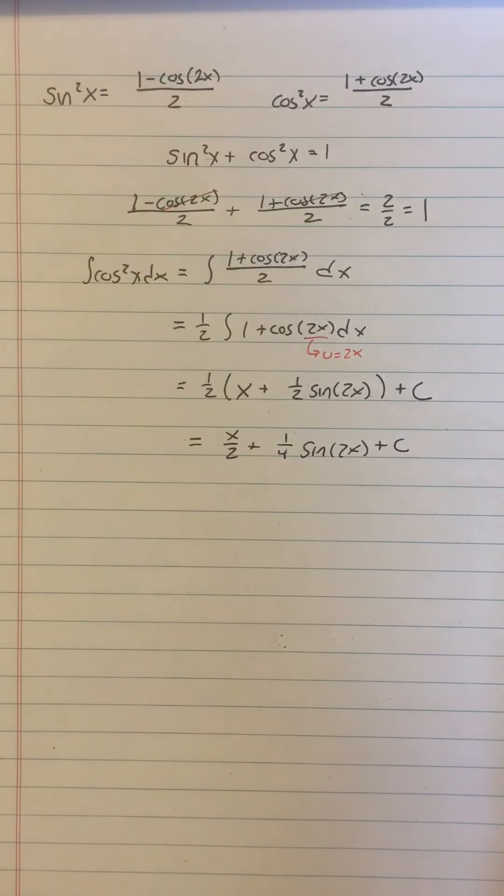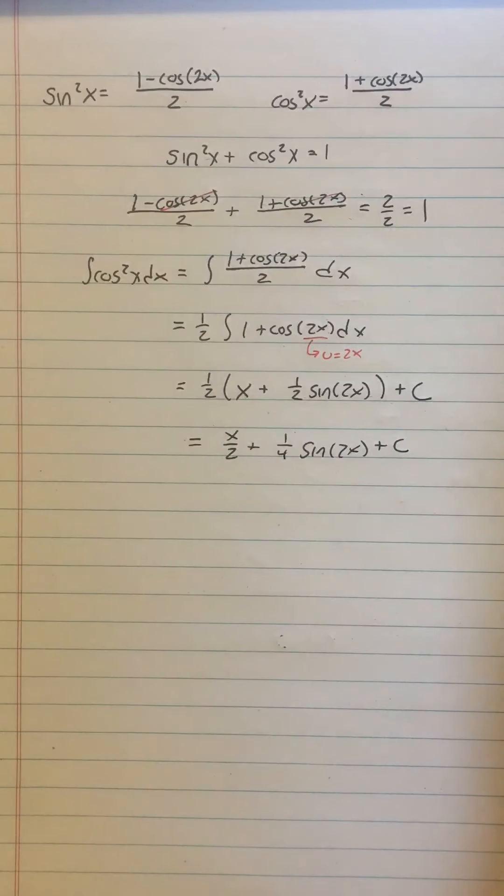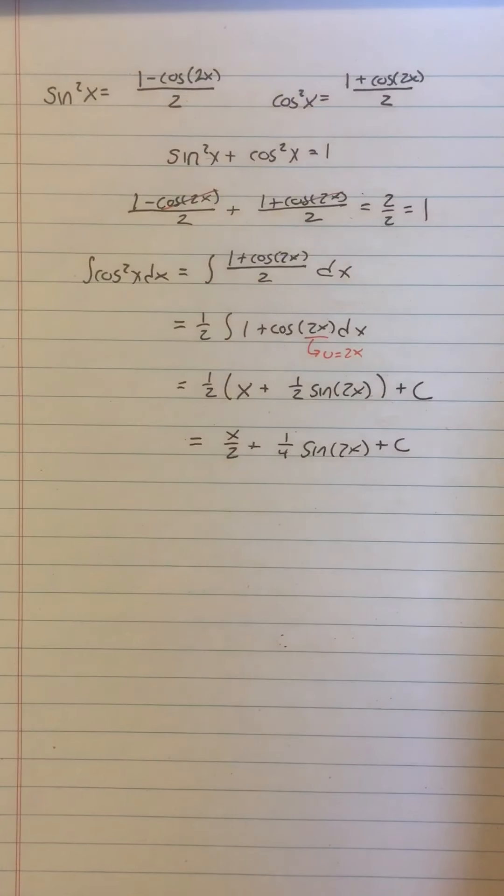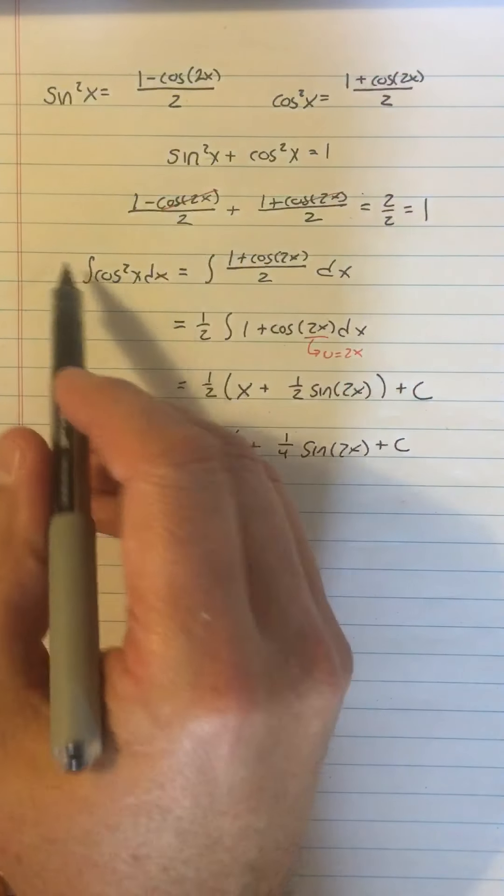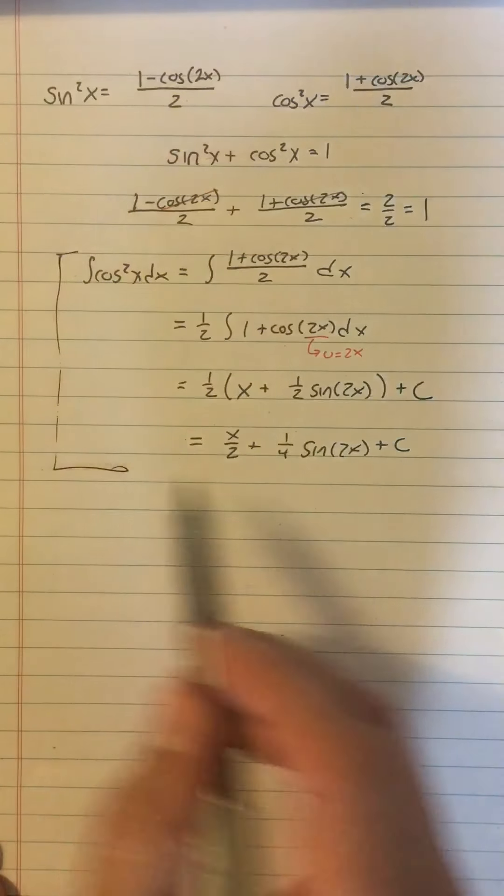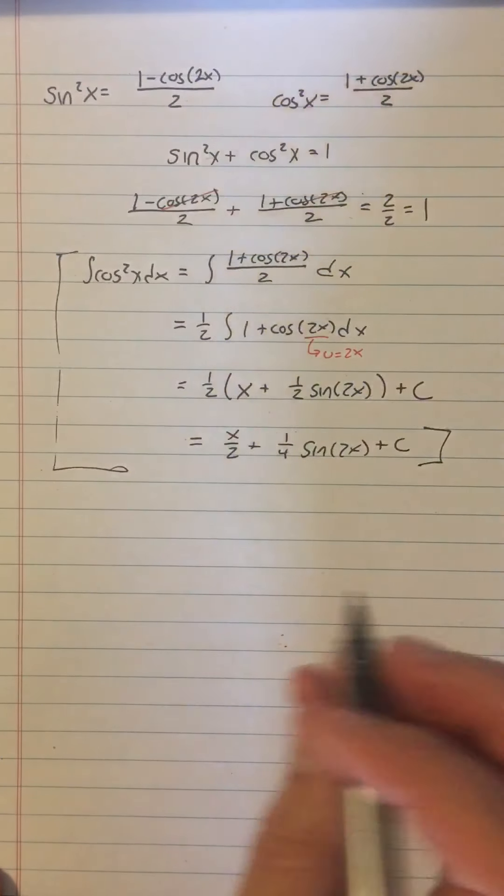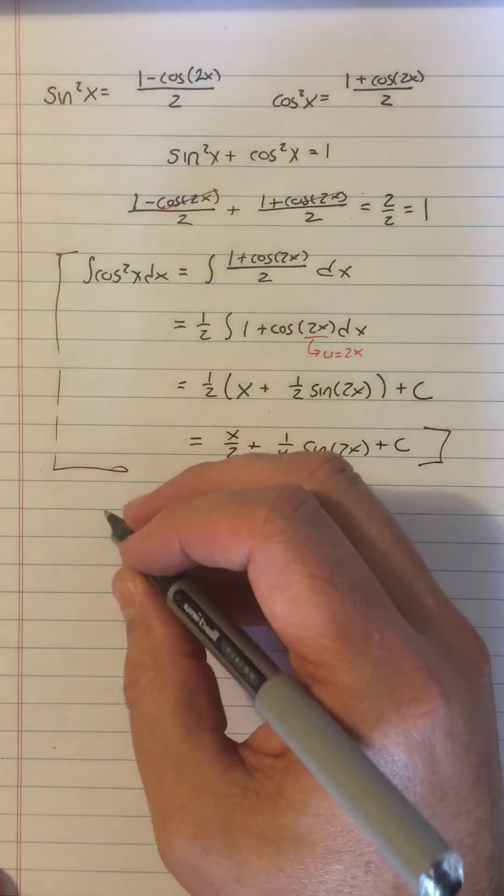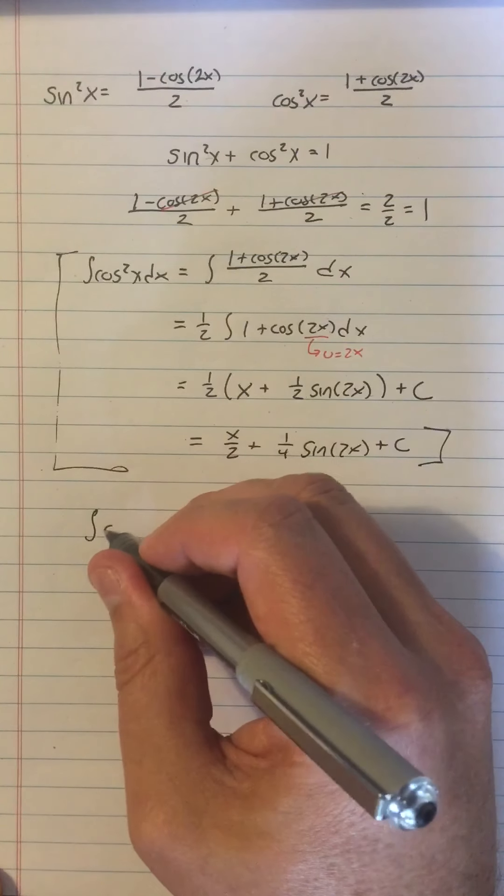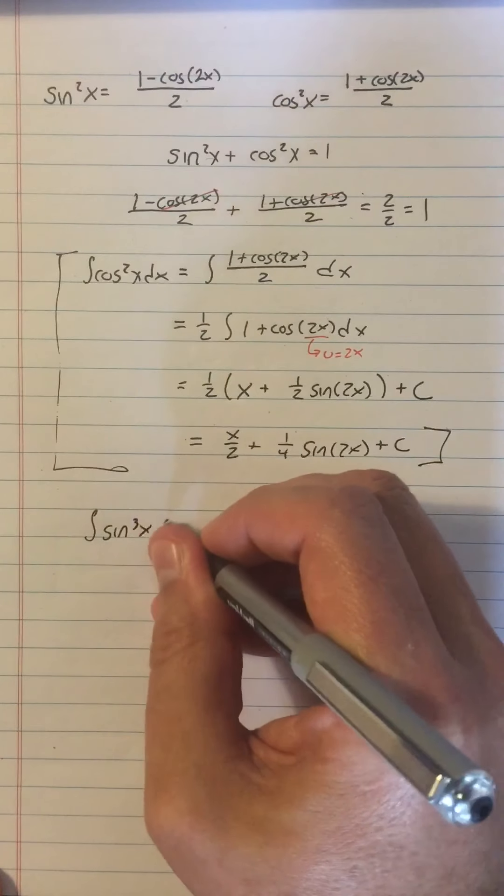All right, so that's how we can do integral of sine squared. Now using this and also using techniques you already know, you can do other powers of sine and cosine. So here's how we did integral of cosine squared. By the way, we want to remember this one because it's going to come back to us. I mean, you don't have to memorize it. We'll remind you when it comes time. All right, so now, what if I had integral of sine cubed x dx?